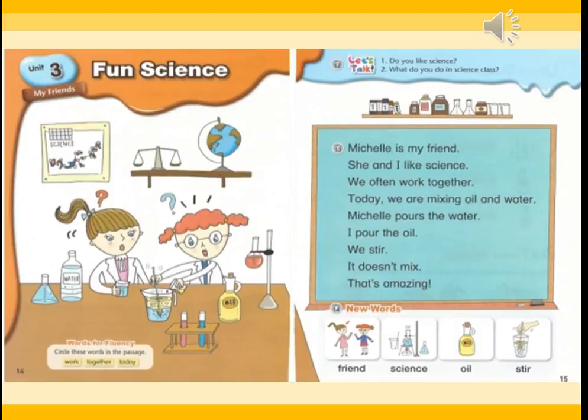Look at the picture on the screen. Two girls are having an experiment in a science class. What do you see in the picture? I can see a stone with a magnifying glass, and there is a glove too. 어떤 과학 실험 용품들이 굉장히 많이 있습니다. (There are many kinds of science experiment supplies.)